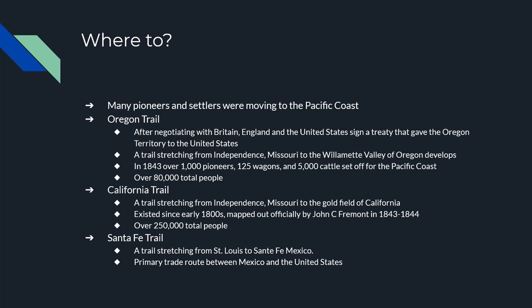Where were these people going? There are three trails that took them to the West Coast. The Oregon Trail takes them to Washington State and Oregon. It starts at Independence, Missouri, and goes to the Willamette Valley of Oregon. In 1843, 1,000 pioneers went, and by the time the Oregon Trail ran its course, over 80,000 people had moved west on it. There's a famous game named after it, and you can still see the wagon wheel ruts preserved in certain places out west.